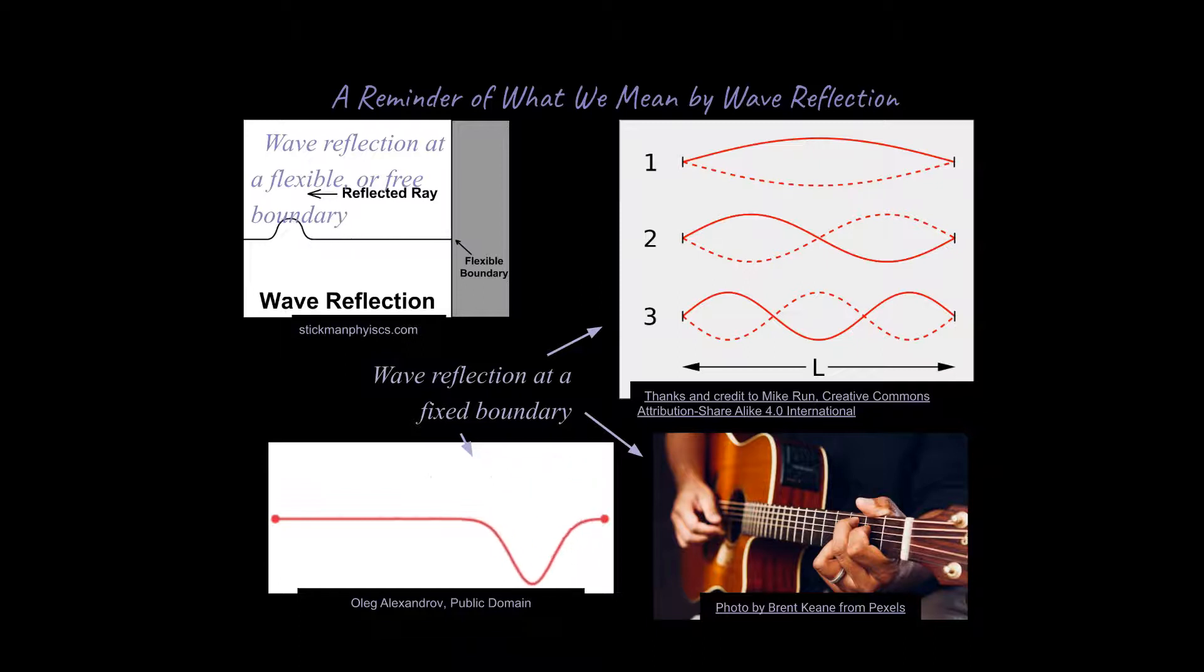All right, so once you have these waves going forward and going backwards, start interfering with each other, now you get a more complex situation. Because if you happen to have the wave of just the right frequency and just the right wavelength, and they are the same for the wave going forward as well as the wave going backwards, they interact with each other, and they can start to form these patterns.